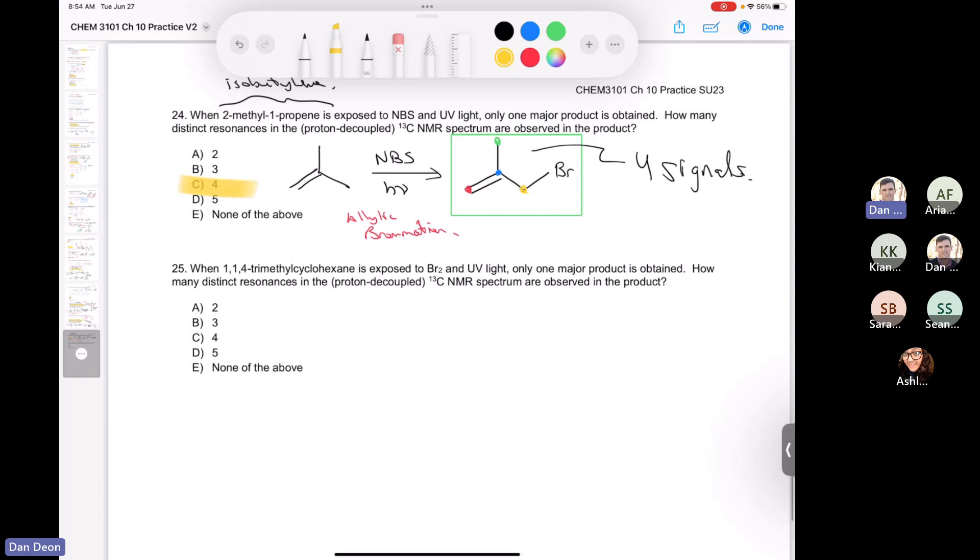Alright, last problem in this question set. It says when 1,1,4-trimethylcyclohexane is treated with bromine and UV light, only one major product is obtained. How many distinct resonances in the carbon-13 will you observe? Alright, so let's draw the compound. So this is cyclohexane. We put 1,1,4. If we treat this with bromine and light, well, I think by now you know that it's going to go on the bottom, so to speak, like this.